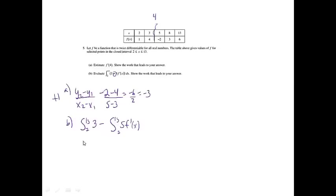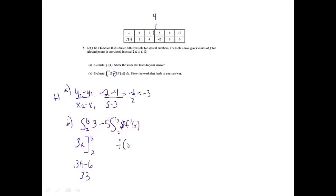I'll evaluate the first integral. The integral of 3 is 3x, evaluated at 13 and 2, giving me 39 minus 6, which equals 33. For the next part, I bump the 5 out front because it's a constant. The integral of a derivative just leaves me with f, evaluated at the endpoints, so it's f of 13 minus f of 2.